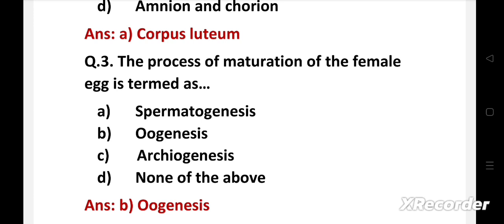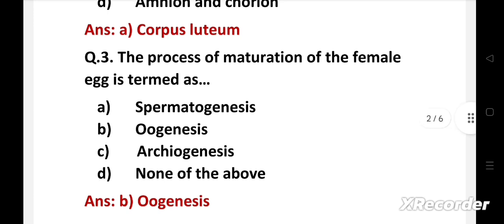The process of maturation of female egg is called oogenesis. Oogenesis occurs in a woman's ovaries and is a process where a primary egg cell matures into secondary egg cell. At puberty, hormones trigger the ovaries to select a primary egg cell and mature it so that it may be fertilized upon its release from the ovary.